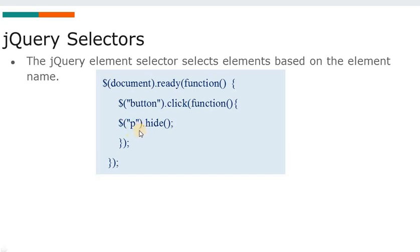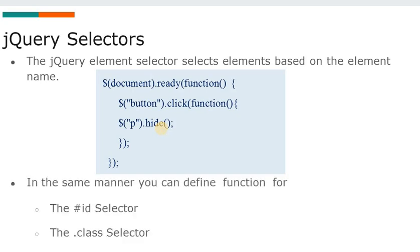Inside the click function, a 'p' element selector with dot hide means: whenever the document is ready and the button is clicked, the paragraph will be hidden. In similar manner you can define functions for ID selector and class selector — here we have used the element selector, but the same syntax applies for ID and class selectors.